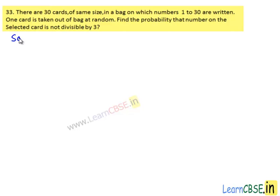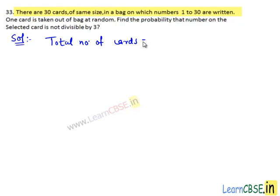Moving on to the solution. There are 30 cards of the same size in a bag on which numbers 1 to 30 are written. So the total number of cards equals 30, which are the card with number 1, card with number 2, card with number 3, and like that, card with number 30.